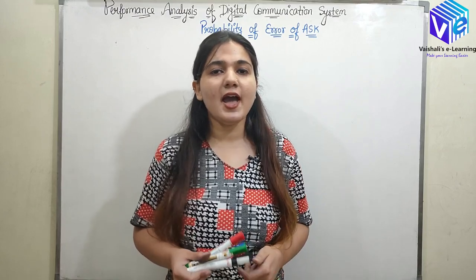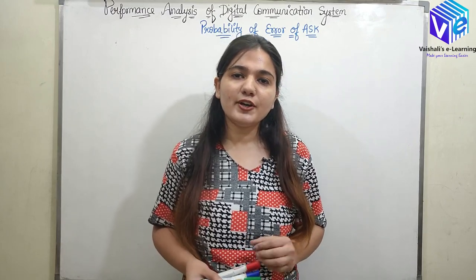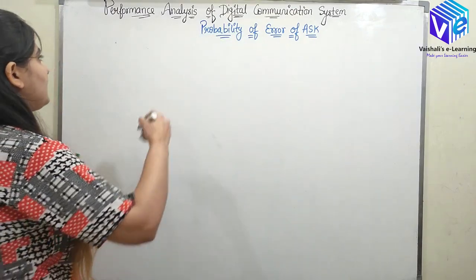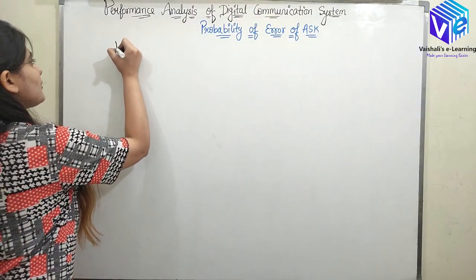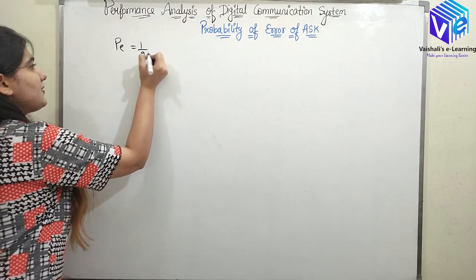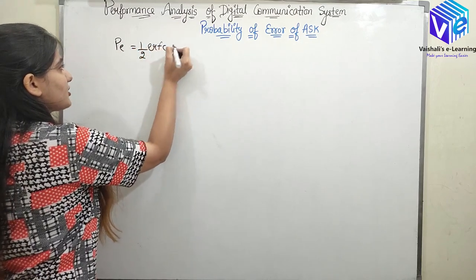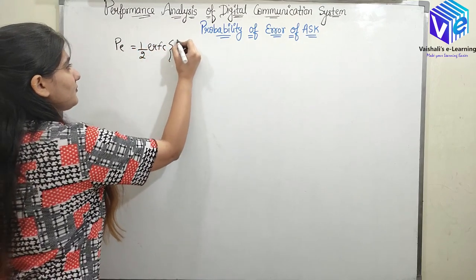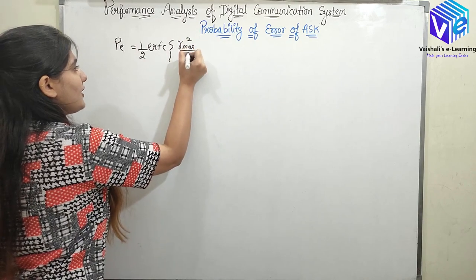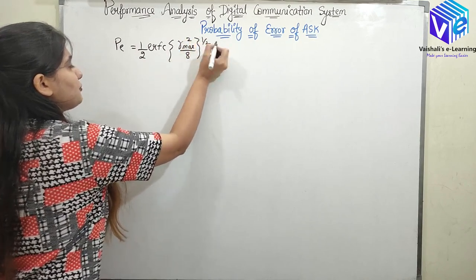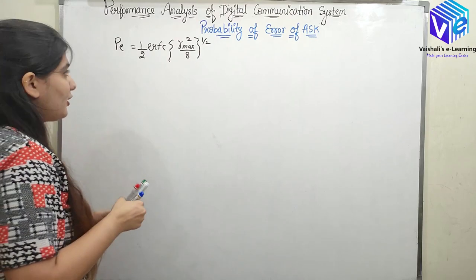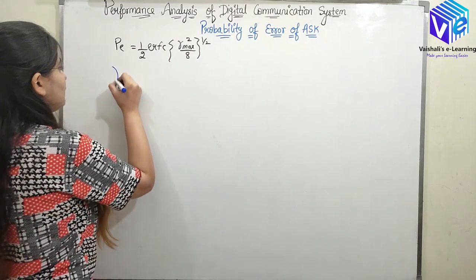I have already given you the generalized formula to find out the probability of error, which was equal to: probability of error = (1/2) erfc( (gamma_max² / 8)^(1/2) ), where gamma_max² was the maximum SNR.